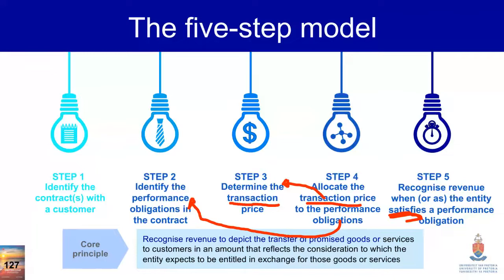Finally, Step Five: we wait for the goods or services to be delivered. In accounting we don't say 'delivered' — we say 'satisfied.' We recognize and record revenue when the performance obligation is satisfied. That's the five-step model at a high level. Keep it in mind because within Step One there are also five sub-criteria — don't confuse the two.